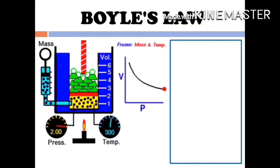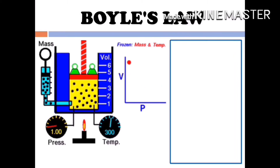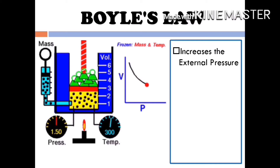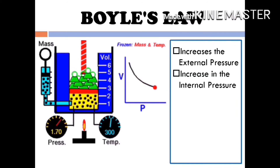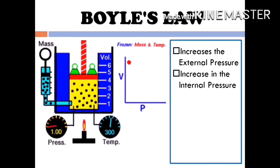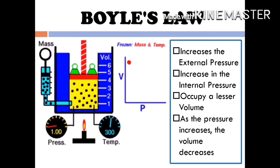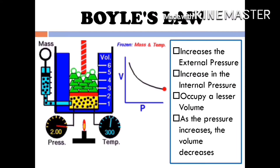Let us explain Boyle's Law using this diagram. Adding more loads on top of the container increases the external and internal pressure. Since pressure increases, this means that the gas molecules occupy a lesser volume. Remember: as the pressure increases, the volume decreases.